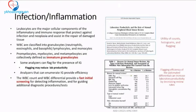The WBC count and differential provide a fast initial screening for detection of inflammation and for guiding additional diagnostic procedures. The utility of counts, histograms, and flagging is supported by published papers showing how it increases or decreases lab productivity.